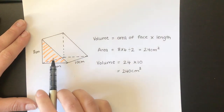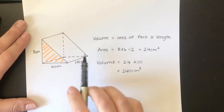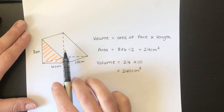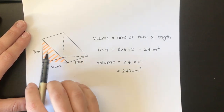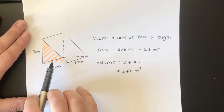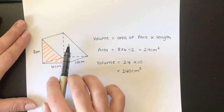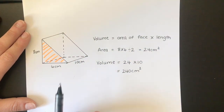The area of the face — the face is the triangle. It couldn't be this rectangle because the rectangle doesn't go all the way through the shape. If I wanted to, I could take this triangle and push it all the way through, and it would come out on the other side of the prism.